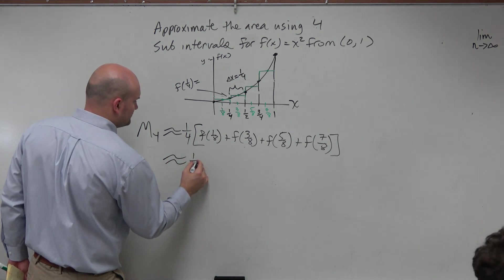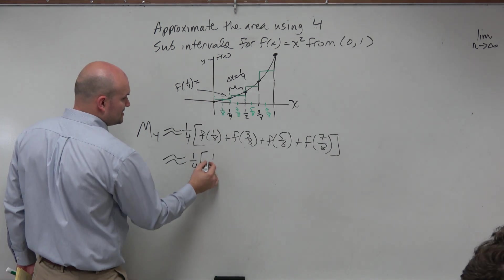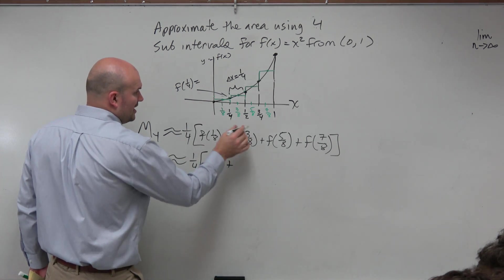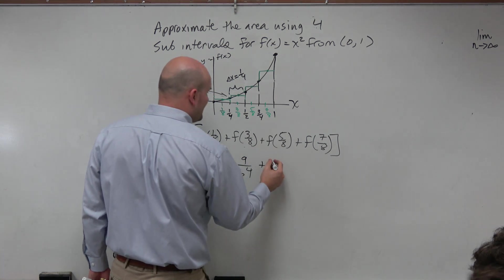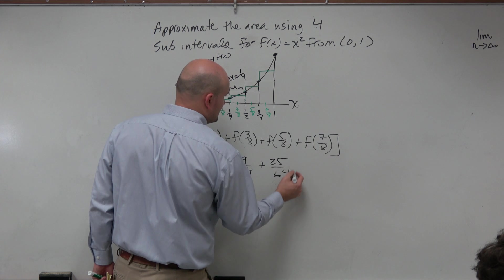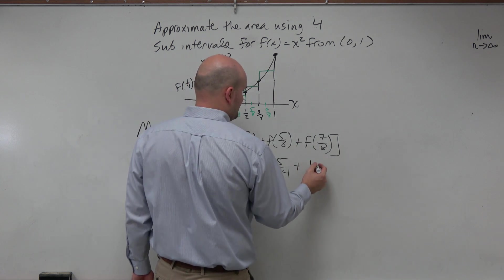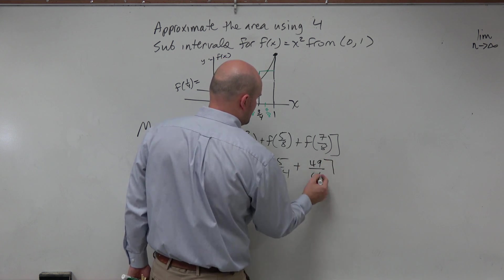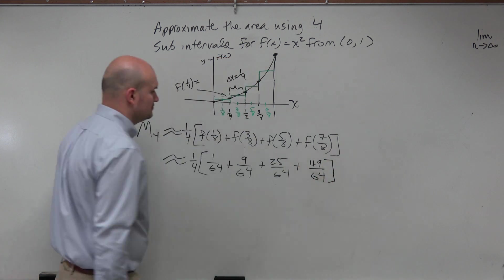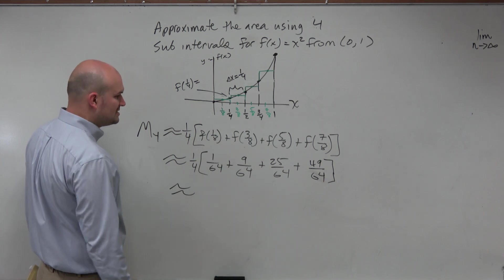So let's go ahead and figure this out. F of 1/8th is going to be 1/64th. F of 3/8ths is going to be 9/64ths. F of 5/8ths is 25/64ths, plus f of 7/8ths is going to be 49/64ths.